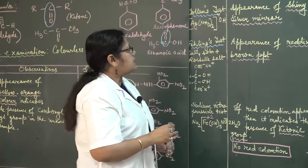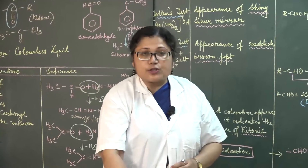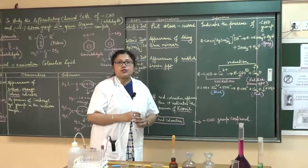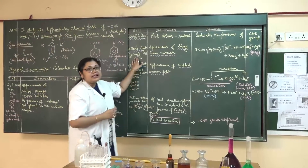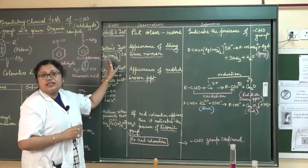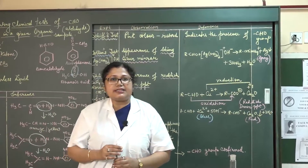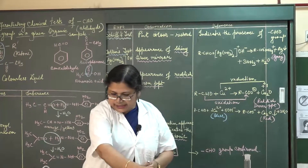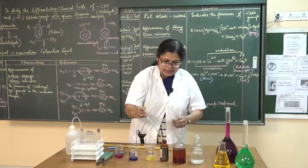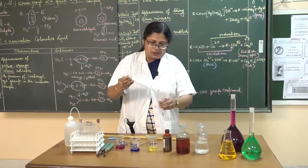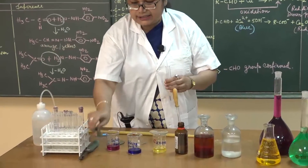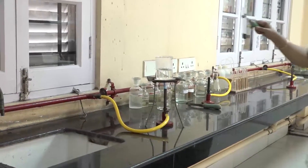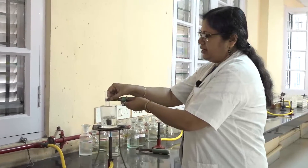Next we perform Tollen's test. Tollen's reagent is a solution of ammonium hydroxide and silver nitrate. On mixing the two solutions in equimolar proportion, we get a complex diamine silver(+), where the oxidation state of silver is +1. Tollen's reagent is a mild oxidizing agent — it oxidizes aldehyde into its corresponding carboxylic acid. I take a little quantity of the organic sample, add a few drops of Tollen's reagent, and then heat the reaction mixture in a water bath for 5 to 10 minutes to see the change.